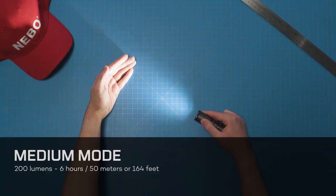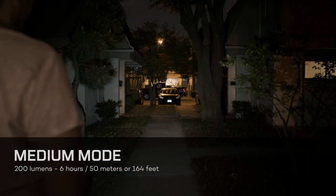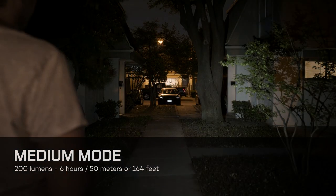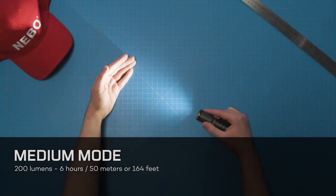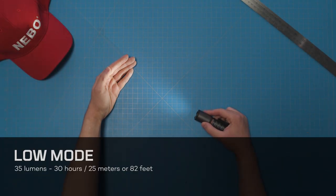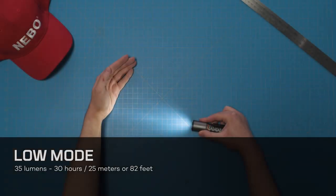And in medium mode, the light is up to 200 lumens for 6 hours of runtime, shining at a distance of up to 50 meters or 164 feet. Low, which is up to 35 lumens for a runtime of 30 hours, shining at a distance of up to 25 meters or 82 feet.